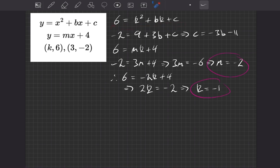So taking this top one, let's replace k with our value of minus 1. So now, we get that 6 is equal to k squared, so now minus 1 squared, plus b times k, so that's going to be minus b, plus c.